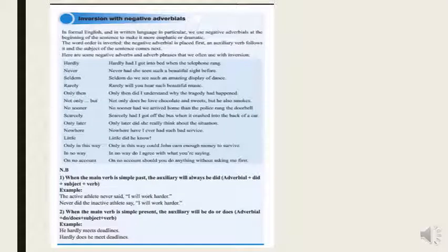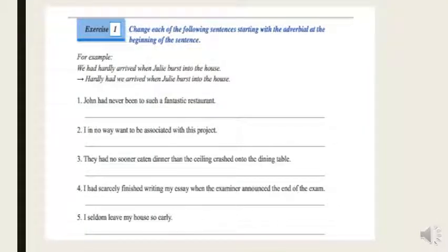When we use adverbs with negative meanings — like seldom, never, rarely, scarcely, hardly — in front position for emphasis, we invert the subject and the auxiliary or modal verb. There is an important note: when the main verb is in the simple past, the auxiliary will always be 'did'. For example: 'the active athlete never said I will work harder' becomes 'never did the active athlete say I will work harder'. When the verb is in the present, the auxiliary will be 'do' or 'does'. Here are also some exercises that we are going to solve together during the live sessions.